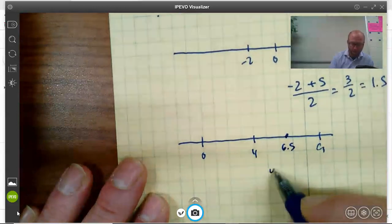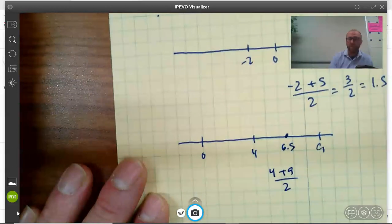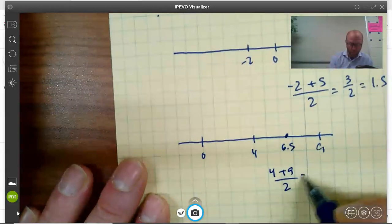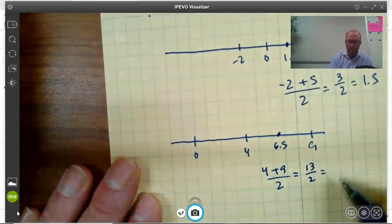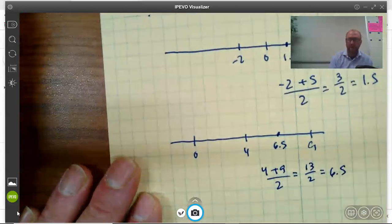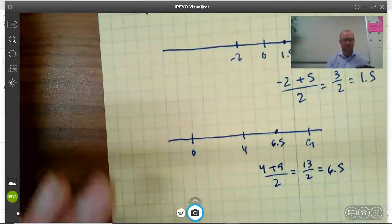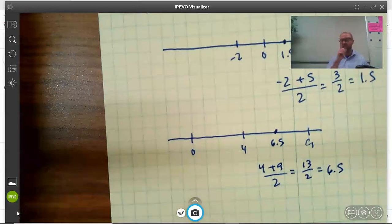But using our formula, add together the 2 and divide by 2. Taking the average of the two numbers. 4 plus 9 is 13 over 2, and 13 divided by 2 is 6.5. So if you want to find a number that is exactly halfway between two other numbers, you just add them together and divide by 2. You take the average of the two numbers.